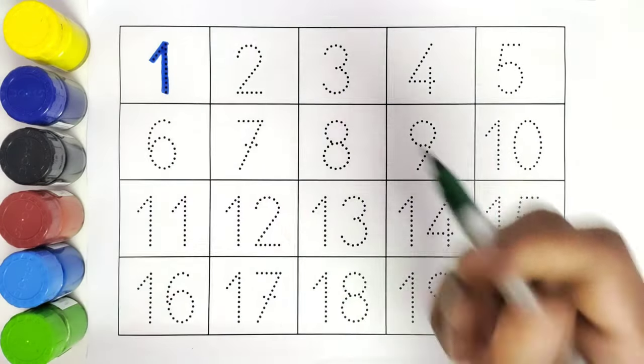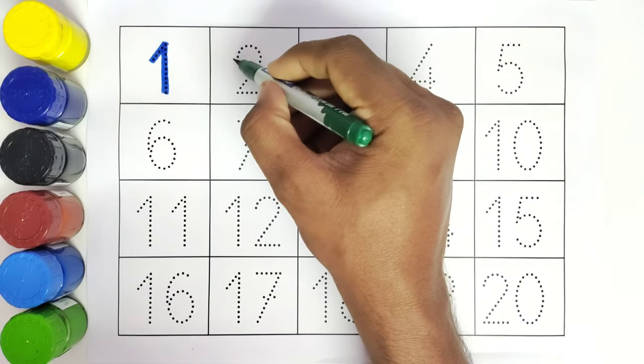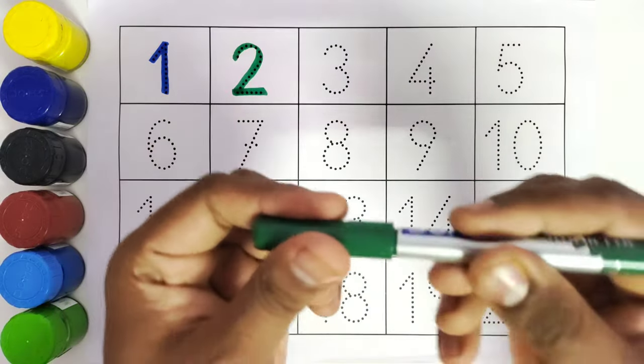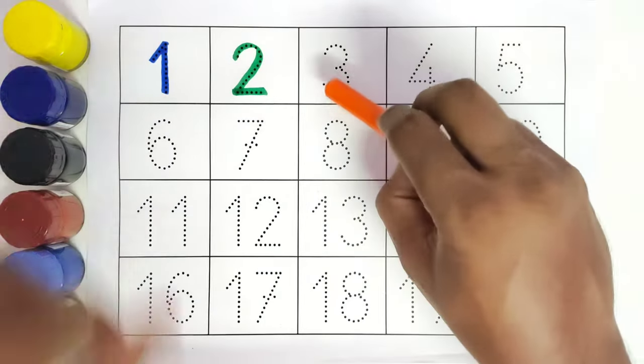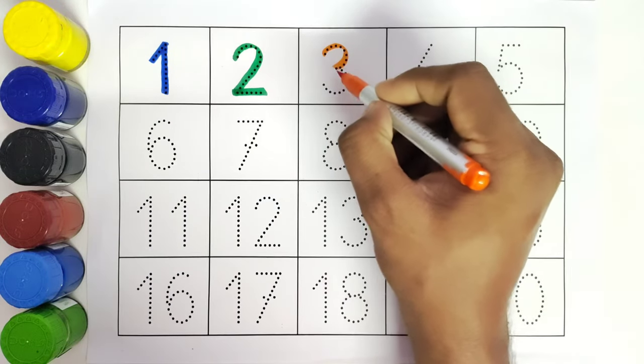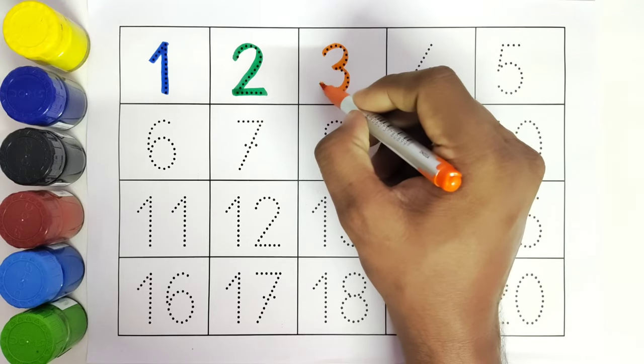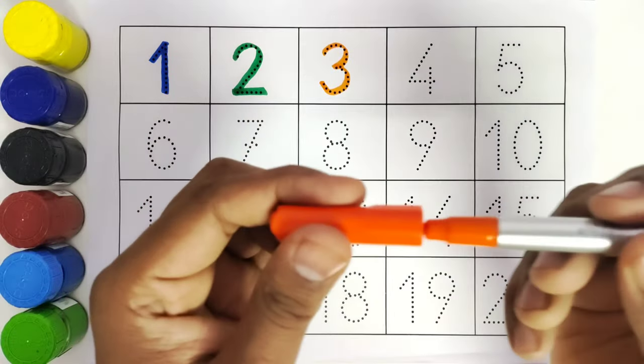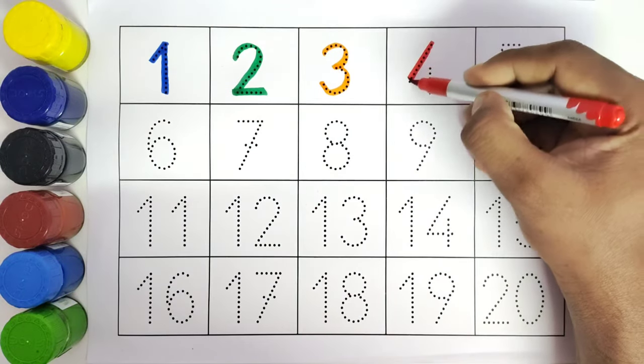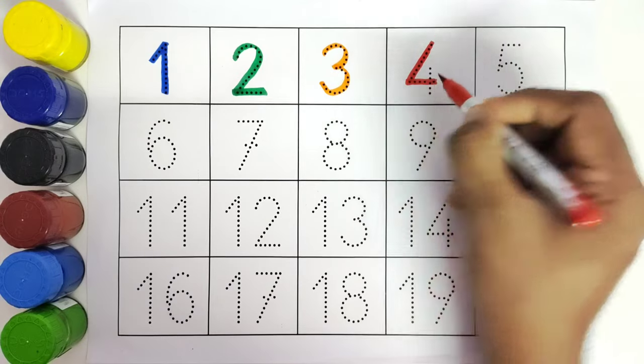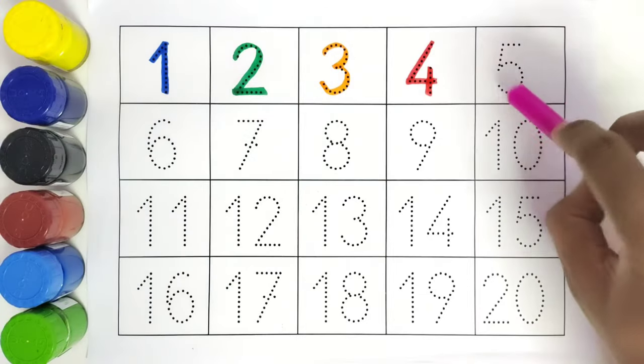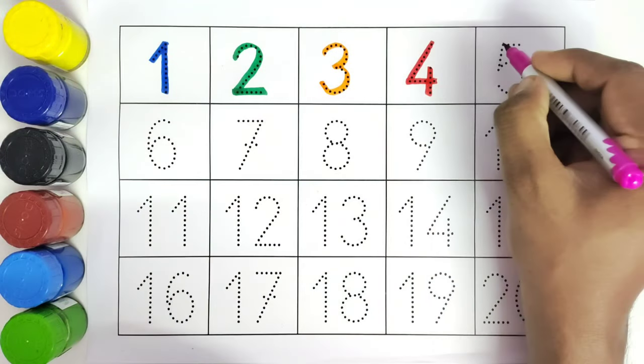This is 2, number 2. This is 3, number 3. This is 4, number 4. This is 5, number 5.